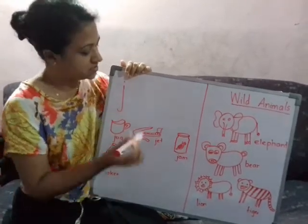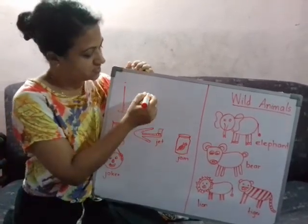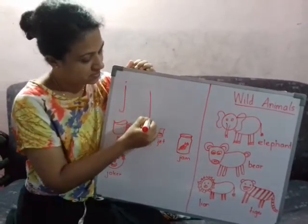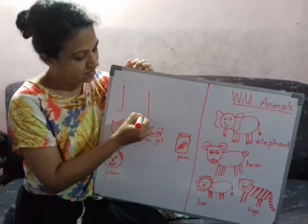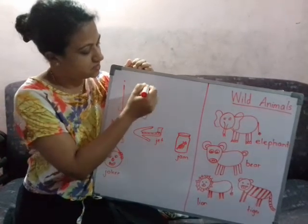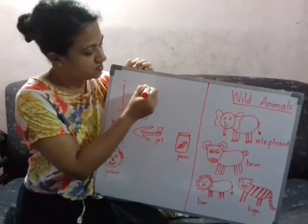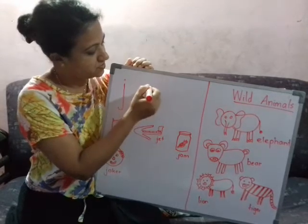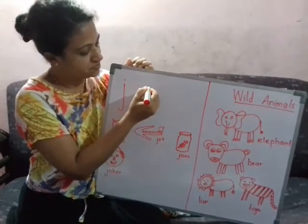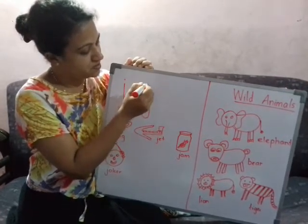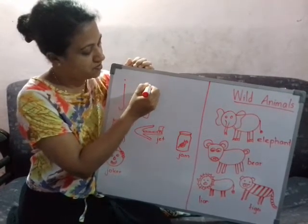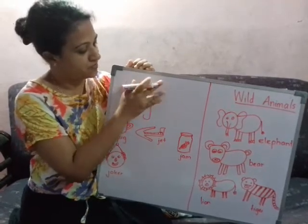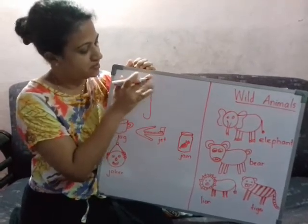We will see how to write J. It is very easy — just a down line, then the curve, a small dot. When you draw the small dot, you just keep a dot. Don't draw big balls like this. This is wrong.